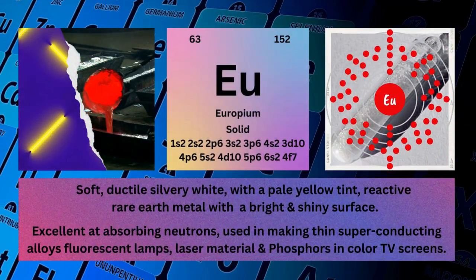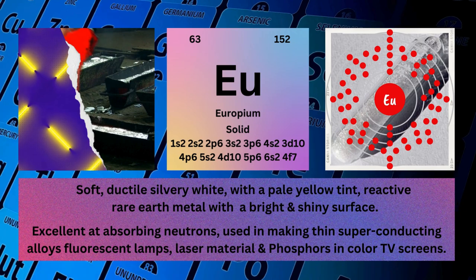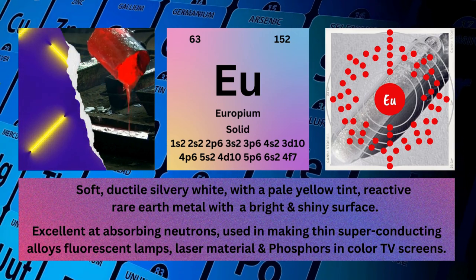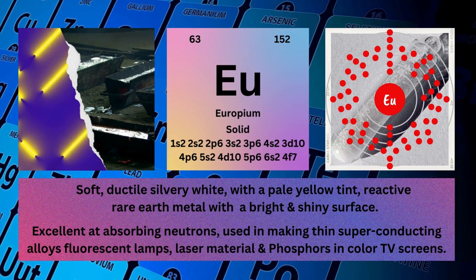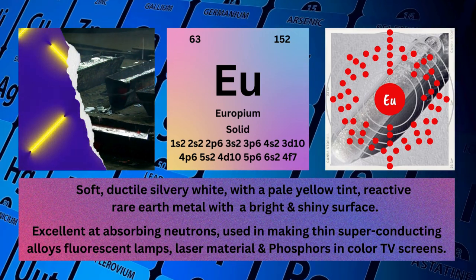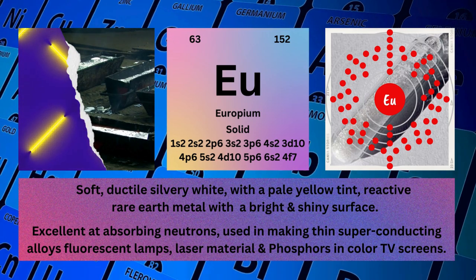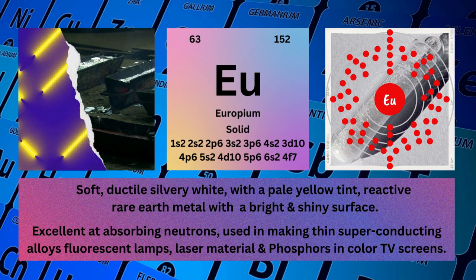Europium. Atomic number: 63. Mass number: 152. Symbol: Eu. State: Solid.